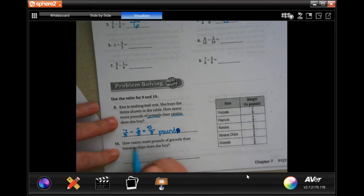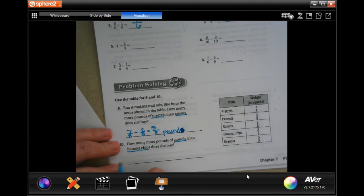How many more pounds of granola than banana chips? So, granola and banana chips. Granola is 5/8. And banana chips is 3/8. Denominator stays the same. And 5 minus 3 is 2. Done.